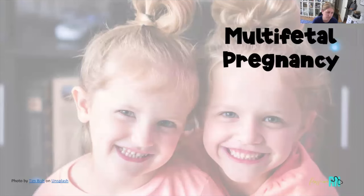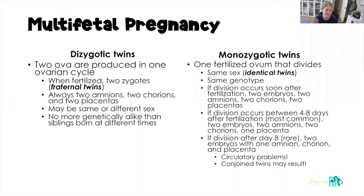Let's talk briefly about multi-fetal pregnancy, specifically twins. Dizygotic twins occur when two eggs are produced in one ovarian cycle and fertilized by two separate sperm, resulting in fraternal twins. Fraternal twins are no more genetically alike than siblings. They have two amnions, two chorions, and two placentas — essentially two pregnancies occurring at the same time. The babies can be the same or different sex. Monozygotic twins come from one egg and one sperm, where that egg during cell division splits into two separate organisms. These are genetically identical human beings — same sex, same genotype.